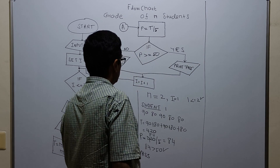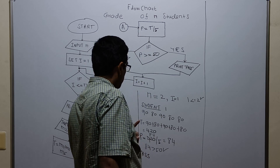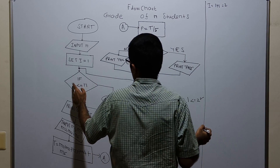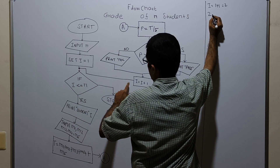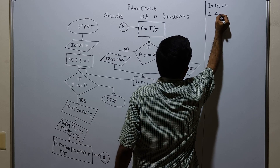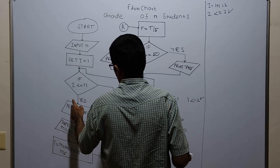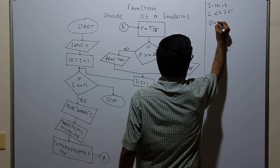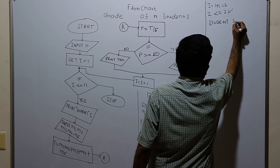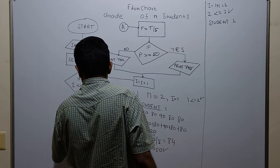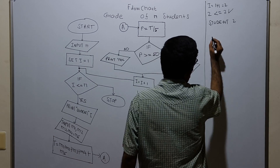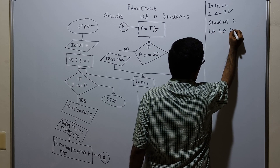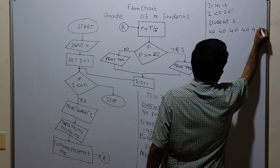In the next iteration, the result for student 1 is pass. I gets incremented by 1: i equals 1 plus 1 equals 2. Checking i less than or equal to n: 2 less than or equal to 2 is true. So I am printing student 2 and entering the 5 subject marks. I am giving marks: 40, 40, 40, 40, and 40.